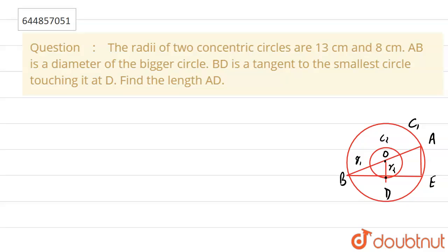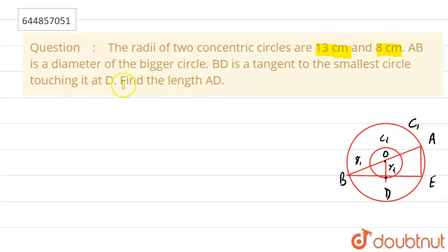...you can see they said that the radii of two concentric circles are 18 centimeter and 8 centimeter. AV is a diameter of the bigger circle and BD is a tangent to the small circle touching it at D. We have to find the length of AD. For this, I already made the circle for you.